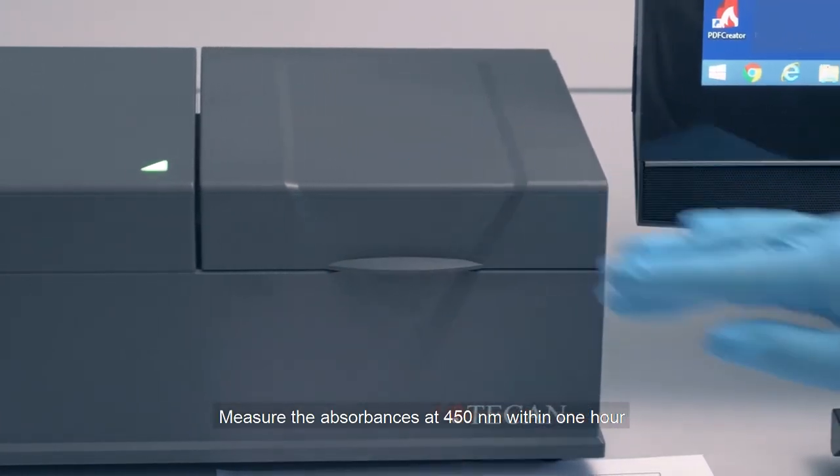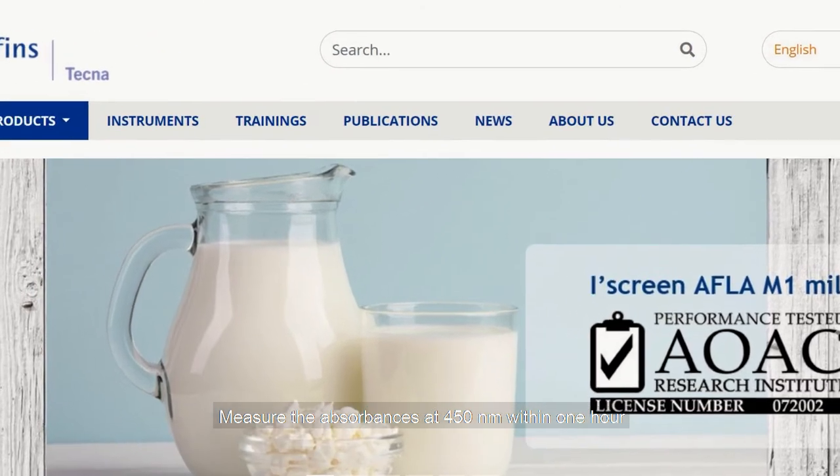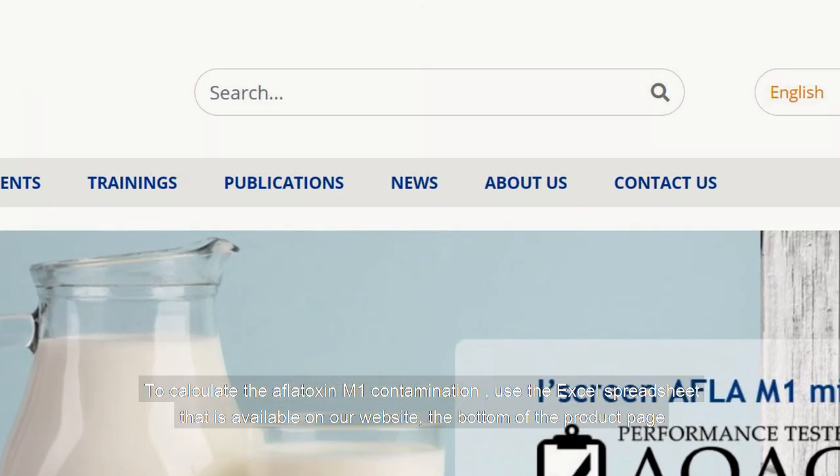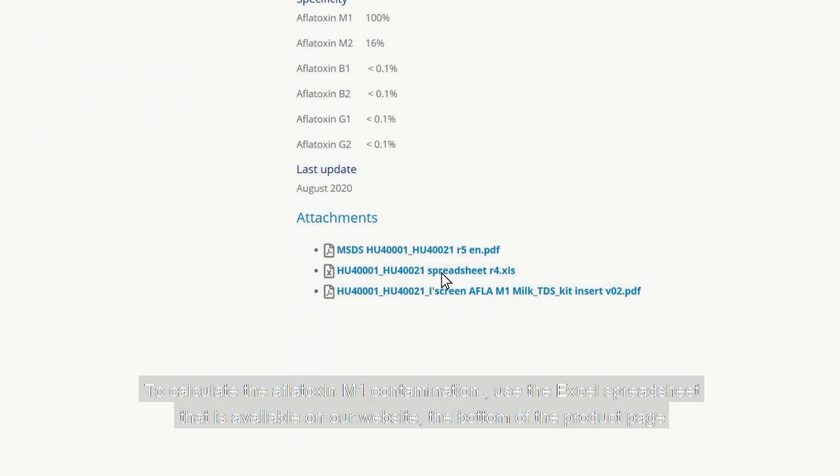Measure the absorbances at 450 nanometers within 1 hour. To calculate the aflatoxin M1 contamination, use the excel spreadsheet that is available on our website at the bottom of the product page.